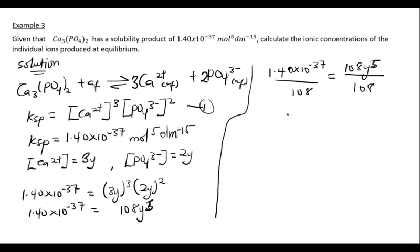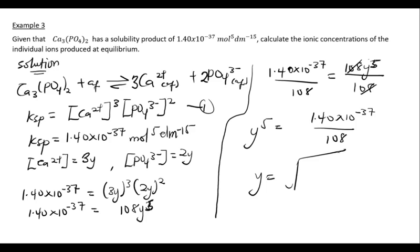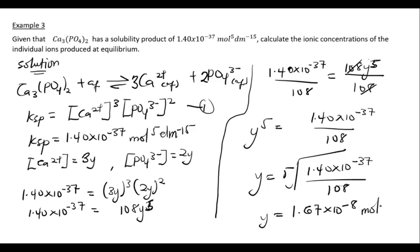Taking the fifth root of both sides: y = ⁵√[(1.40 × 10⁻³⁷) / 108], which gives y = 1.67 × 10⁻⁸ mol per dm³. To find the individual ionic concentrations, we substitute this value of y back into our expressions.